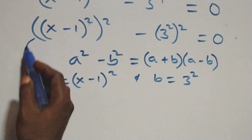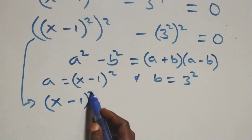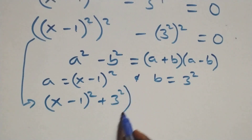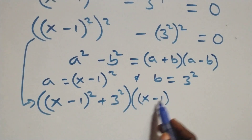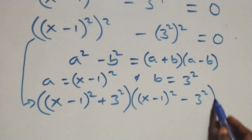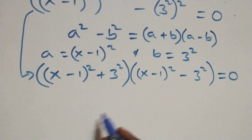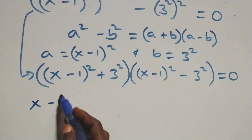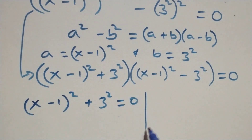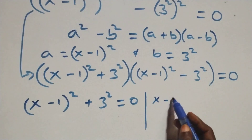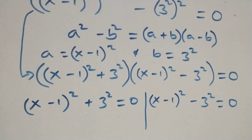So the expression becomes [(x minus 1)² plus 3²] times [(x minus 1)² minus 3²] equals zero. This gives us two possible cases: Case 1 is (x minus 1)² plus 3² equals 0, or Case 2 is (x minus 1)² minus 3² equals 0.